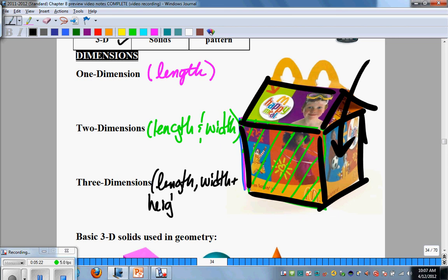That's a three-dimensional concept. So length is one dimension, length and width which is an area concept is two dimensions, and then length, width, and height is a three-D concept. That is what we call volume, and that's what we're going to be working on this chapter.